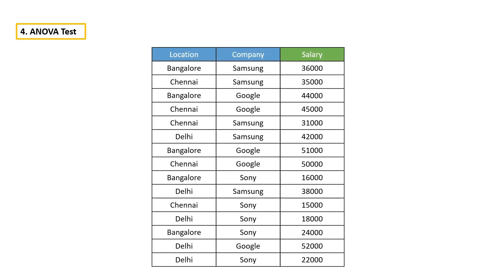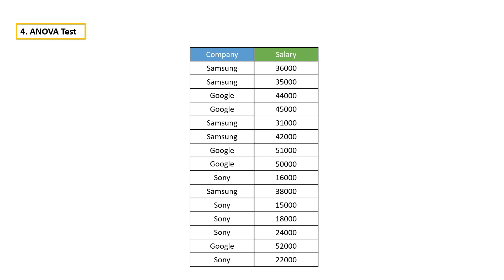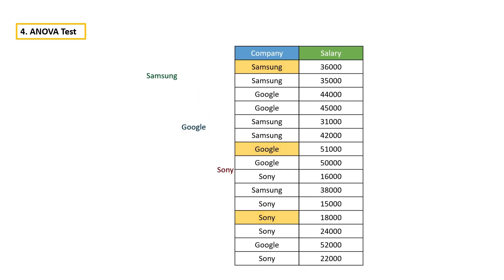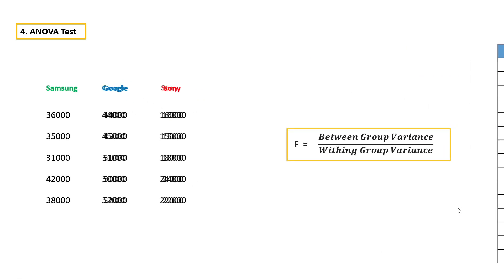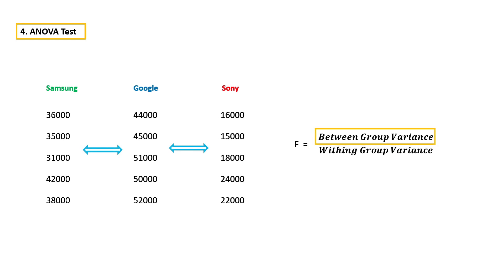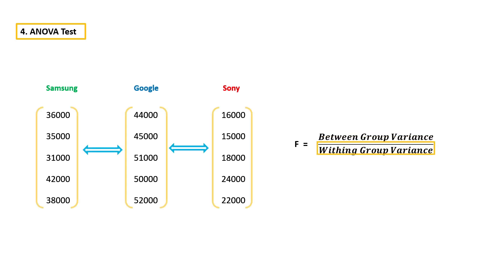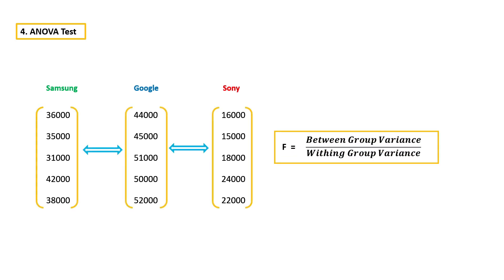Let's say this is our dataset. Let's take the company feature first and calculate the F-score. There are three different companies. Let's take all three companies and their corresponding salary. The idea behind ANOVA is to calculate between group variance and divide it by within group variance. If the F-score is high, then that feature is important; if the F-score is less, then that feature is not important. So we have to calculate both between group variance as well as within group variance.